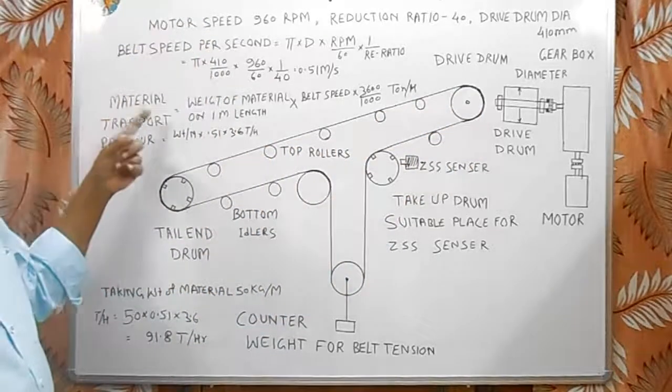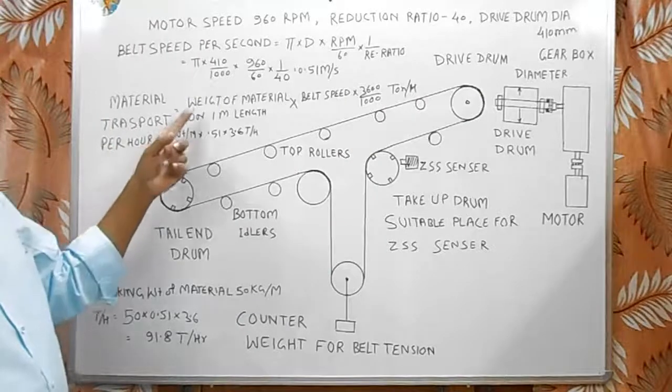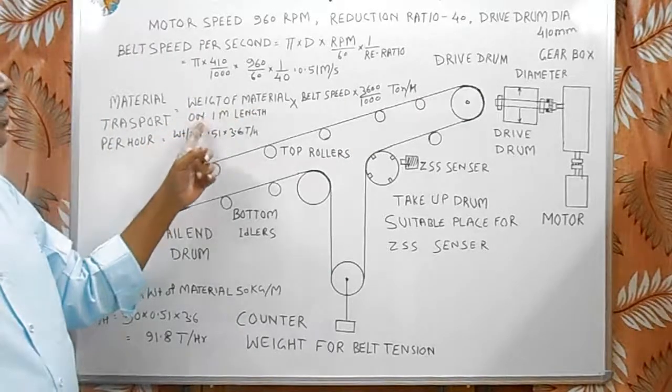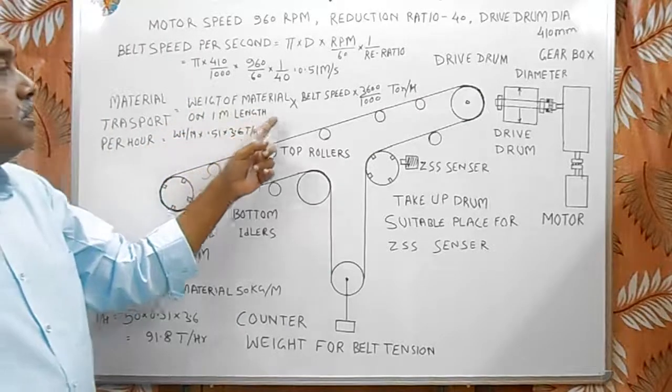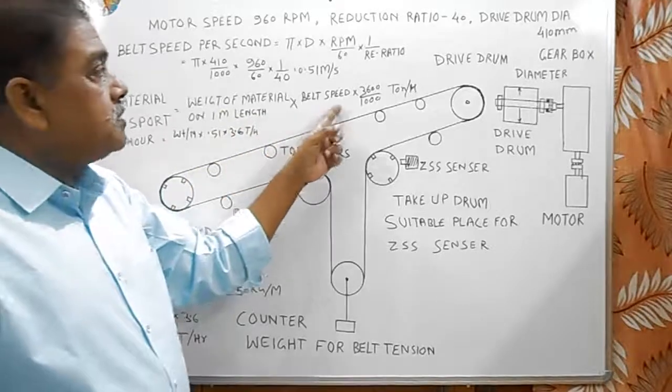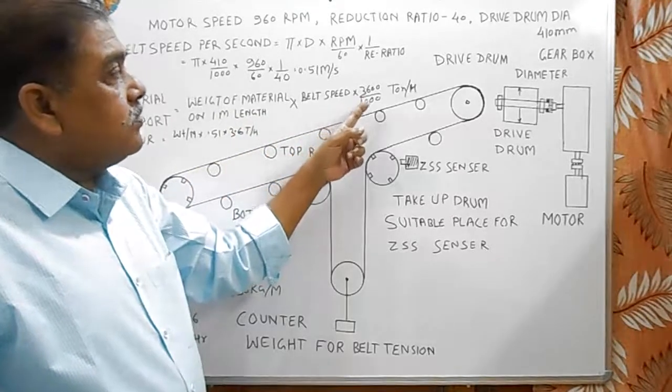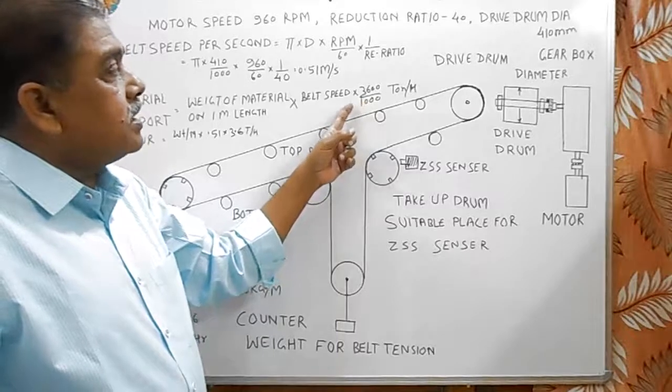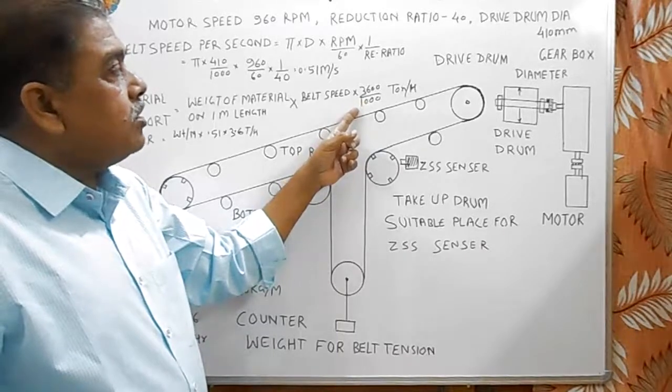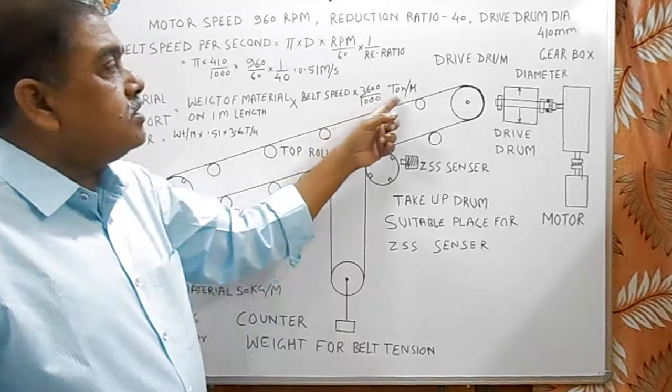Then material transported per hour is equal to weight of material on 1 meter length of the belt multiply by belt speed into 3,600 for 1 hour, means seconds in 1 hour, divided by 1000 to convert it into tons per hour.